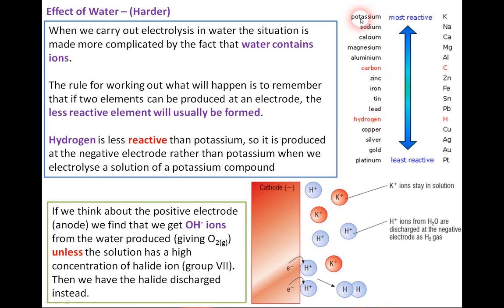Hydrogen is less reactive than potassium. Potassium is right at the top of the series as the most reactive. So with hydrogen⁺ and K⁺ ions present, since hydrogen is less reactive, following the rule, at the negative electrode when we electrolyse a solution of a potassium compound, we get H₂ gas rather than potassium. We can test for H₂ gas using the squeaky pop test.